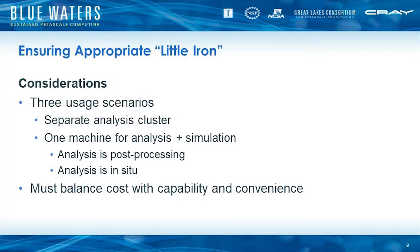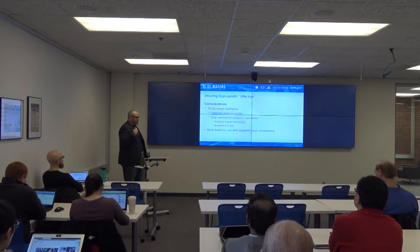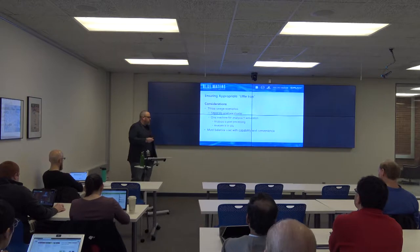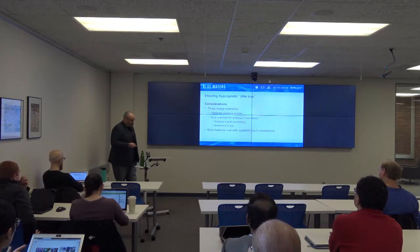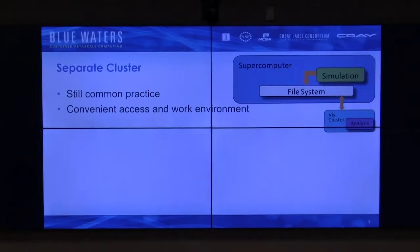One of the first things you have to do is ensure you have an appropriate Little Iron — either a completely separate analysis cluster or one machine that does everything. The main consideration is cost versus capability and convenience. For the separate cluster, this is still the most common usage scenario at places like Argonne or Oak Ridge, which have multiple separate pieces of hardware for analysis and visualization. If you're lucky, they're connected by the same file system — you run your simulation, dump to a file system, then do your analysis and visualization from that cluster.